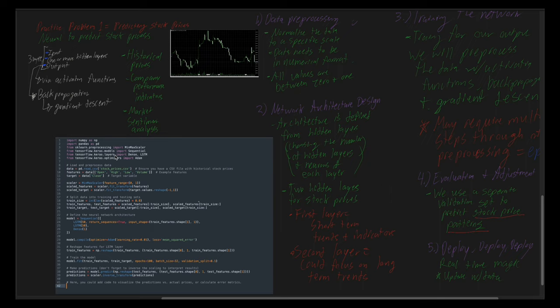Going over our following script: we are first calling upon different libraries to pull and make various commands. In the first step, we load and preprocess the data — we have a CSV file of stock prices and we make features to predict, including open, high, low, and volume, with close as the target variable. We use the MinMaxScaler from scikit-learn preprocessing to convert features numerically and fit and transform the features, then reshape the data to output the following predictions.